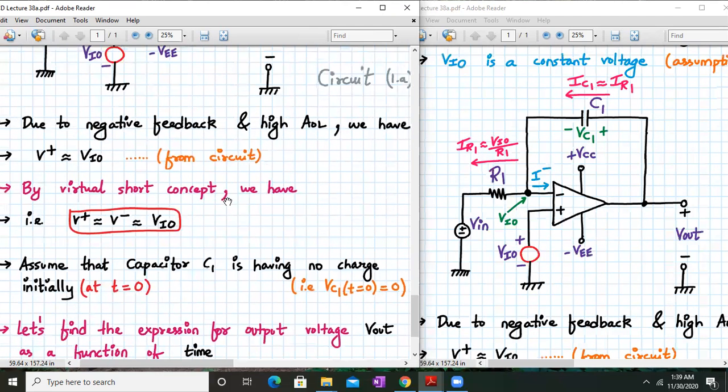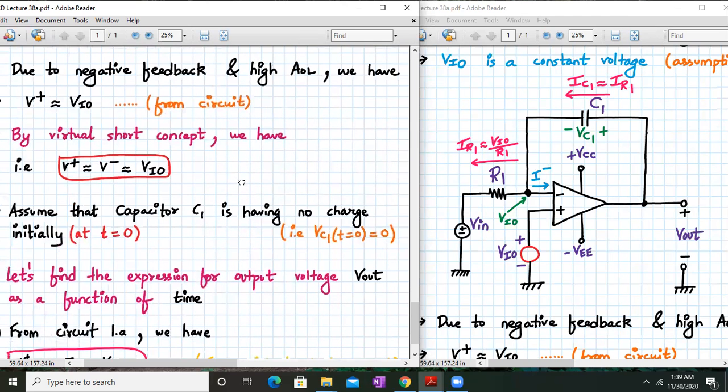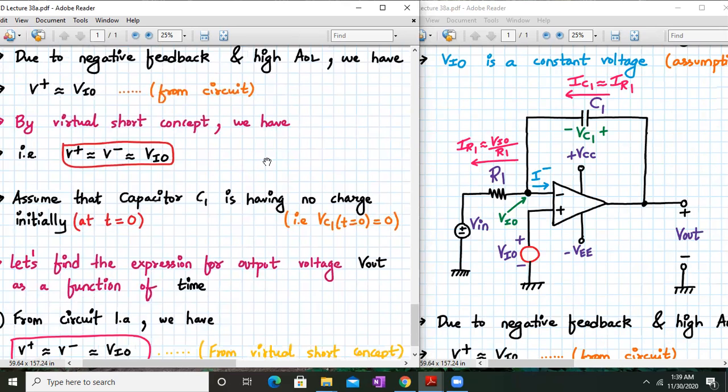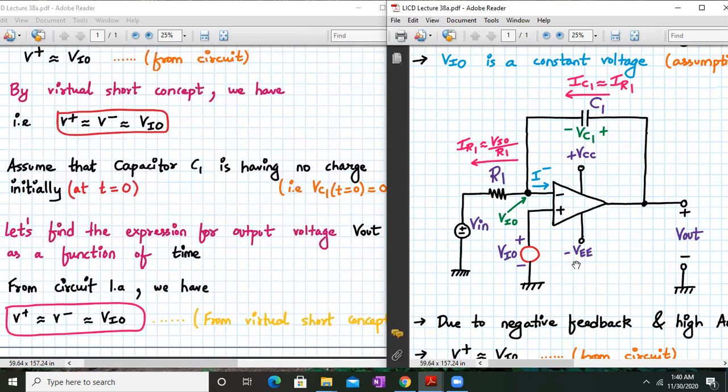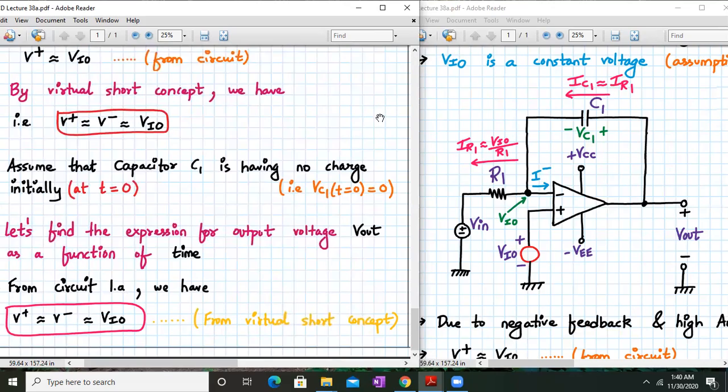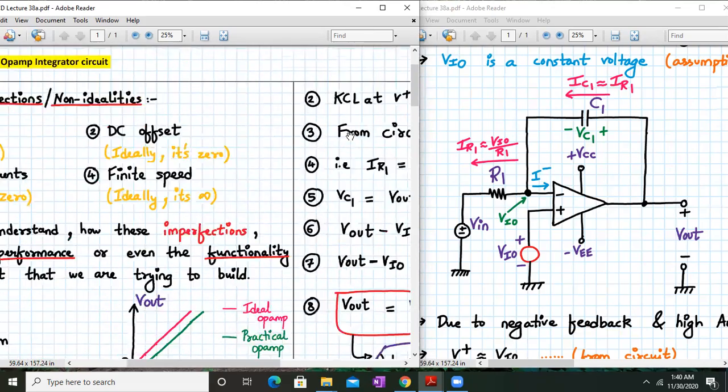So let us set VIN equal to 0 and analyze the circuit just with the DC offset voltage. We also assume that VIO, the DC offset voltage, is a constant voltage. Due to negative feedback and high open-loop gain, from the diagram we can say that V+ is equal to VIO from the circuit. Also, by virtual short concept, we can say that V+ is equal to V- is equal to VIO.